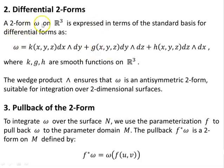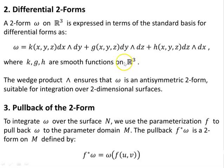So, differential two-forms. A two-form omega in R3 is expressed in terms of the standard basis for differential forms as: omega equals K(X,Y,Z) dX∧dY plus G(Y,Z) dY∧dZ, and so on. Where K, G, and H are smooth functions on R3 — smooth meaning continuous with no sudden changes in the value of the derivative at any point. The wedge product ensures that omega is an anti-symmetric two-form suitable for integration over two-dimensional surfaces.